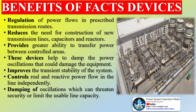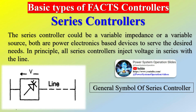Series controllers provide independent series reactive compensation for each line, but also transfer real power among the lines via the power link — the interline power flow controller. The combination could be separate series and shunt controllers or a unified power flow controller. In principle, combined shunt and series controllers inject current into the system with the shunt part and voltage in series with the line with the series part.